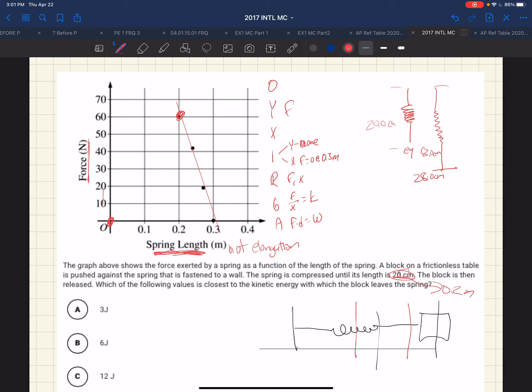The block is then released. Which of the following values is closest to the kinetic energy with which the block leaves the spring? We know the slope of this graph should be the spring constant.